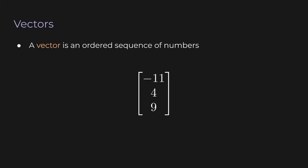As opposed to scalars, we have vectors. A vector is an ordered sequence of numbers, just a list of numbers. The numbers in a vector are called the entries or elements of the vector. So negative 11 is the first entry of the vector, and 9 is the third or last element of the vector.